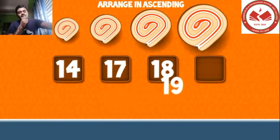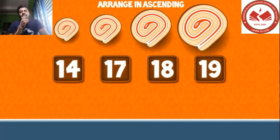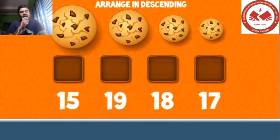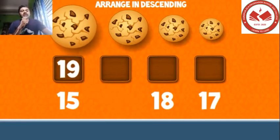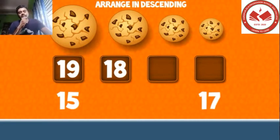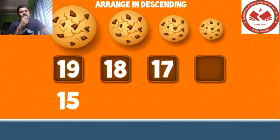Our series is completed. This is called arrangement of numbers from smaller to greater. Now let's try to complete another series. In this series we have to arrange numbers from greater to smaller, so we can put 19 in the first box. To complete the series we have to put 15 in the last position.